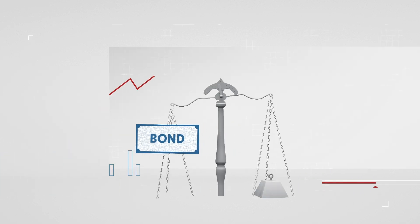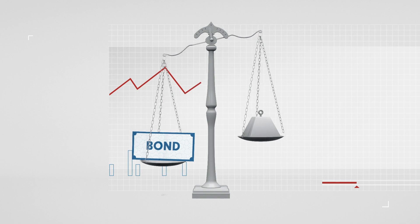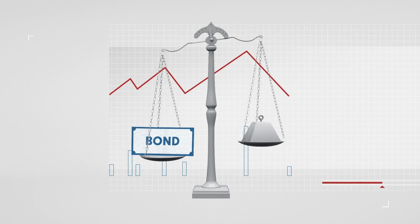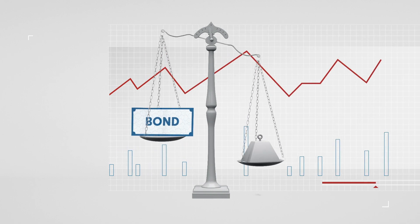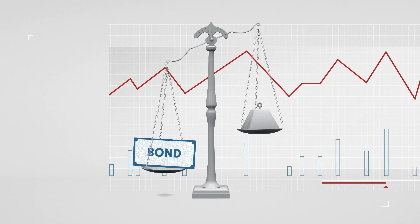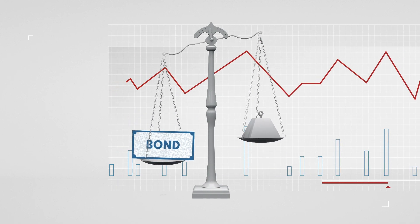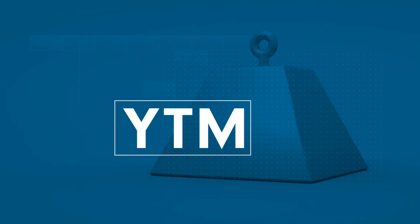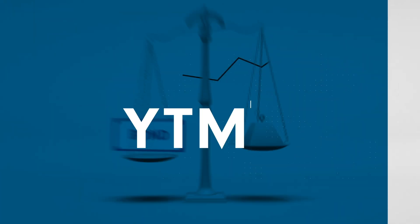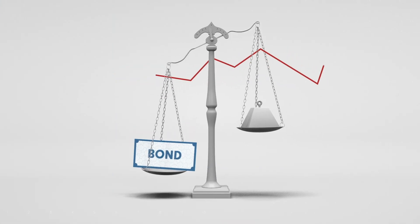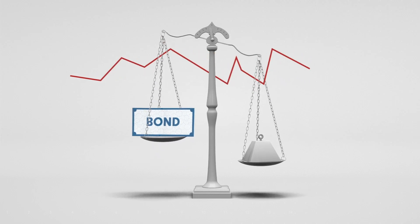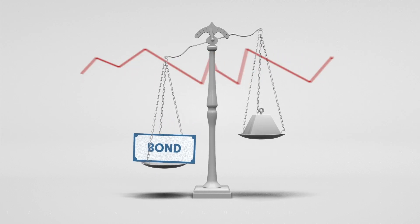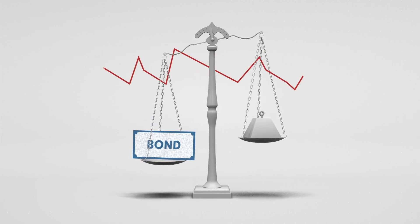However, bond prices are decided by the market and will fluctuate due to changes in credit ratings and current and future interest rates. Yield to maturity, or YTM, measures a bond's rate of return when buying it at different times when the price may vary from the original par value.